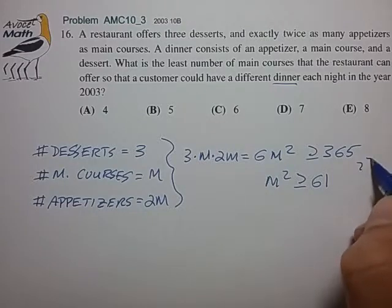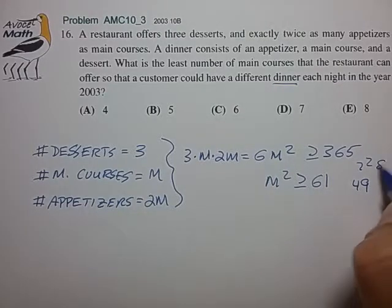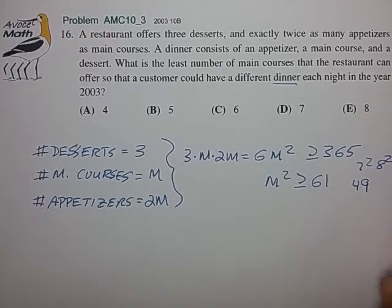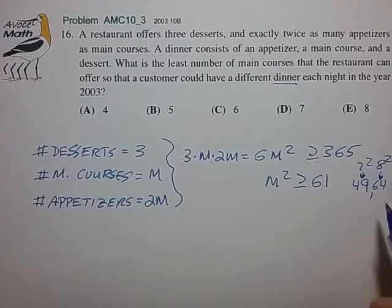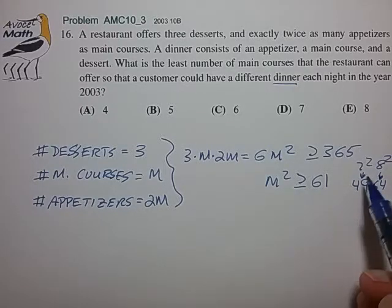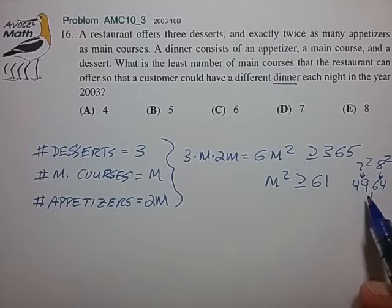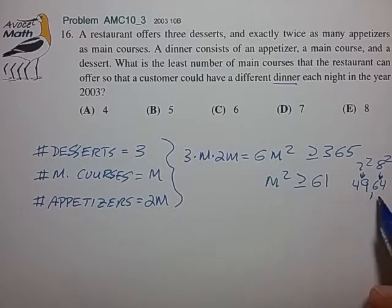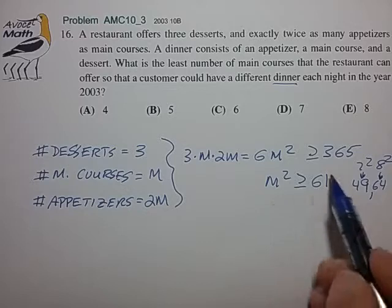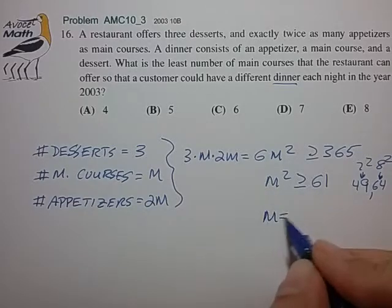We have 7 squared is equal to 49 and 8 squared is equal to 64. And from that simple list we can notice that a choice of M equal to 7 is not quite enough to satisfy this condition and the choice of M squared is equal to 64 is just enough to satisfy this condition. So the smallest M that can satisfy this condition is an M equal to 8.